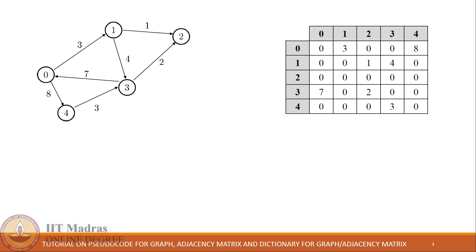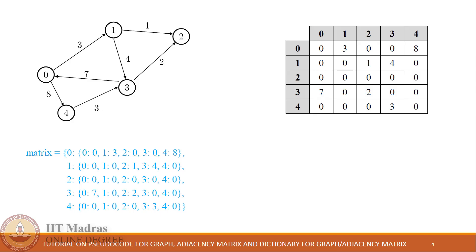It can be processed further using a pseudo code. The equivalent representation of this adjacency matrix in terms of a dictionary will look something like this. If you look at this particular variable 'matrix', it's a dictionary of dictionaries where the first level of dictionary stores four different keys: 0, 1, 2, 3, 4. These keys represent row indexes from the given matrix. Against each row index there is a sub-dictionary, and this nested dictionary again has keys 0 to 4, which represent the columns of the matrix.